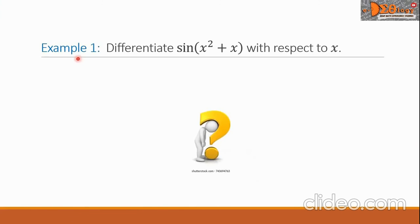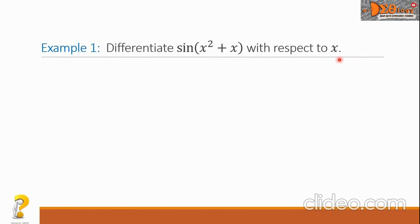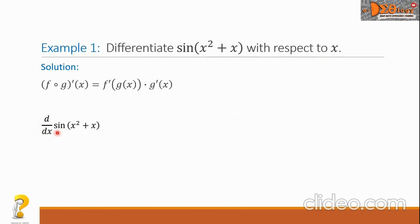Example 1: Differentiate sine of the quantity x squared plus x with respect to x. Let us write the formula for the chain rule. We can see that sine is the outside function, and the polynomial x squared plus x is the inside function.